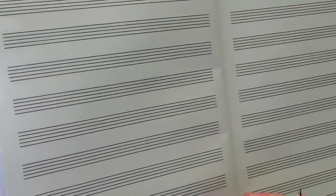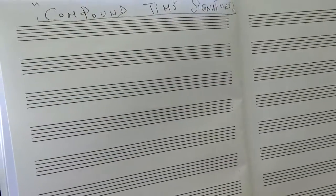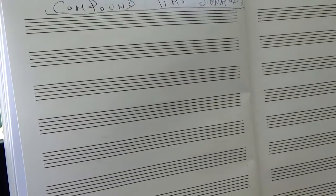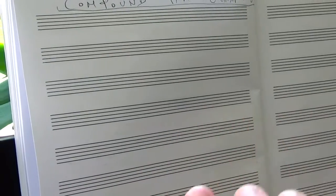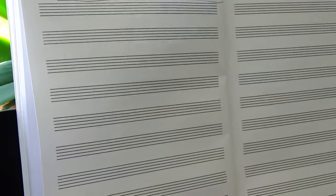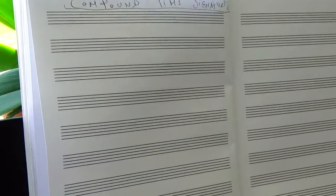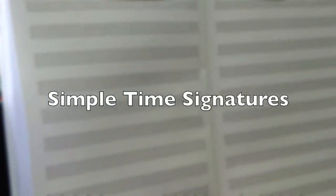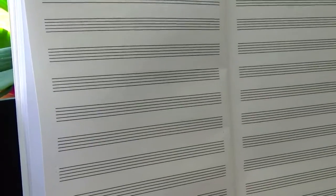Which ones are the compound time signatures? Until now we have analyzed and we have overused the time signatures featuring, as a bottom number, the number 4. Indeed, these time signatures using the number 4 are the ones that we call simple time signatures. They are in simple time.